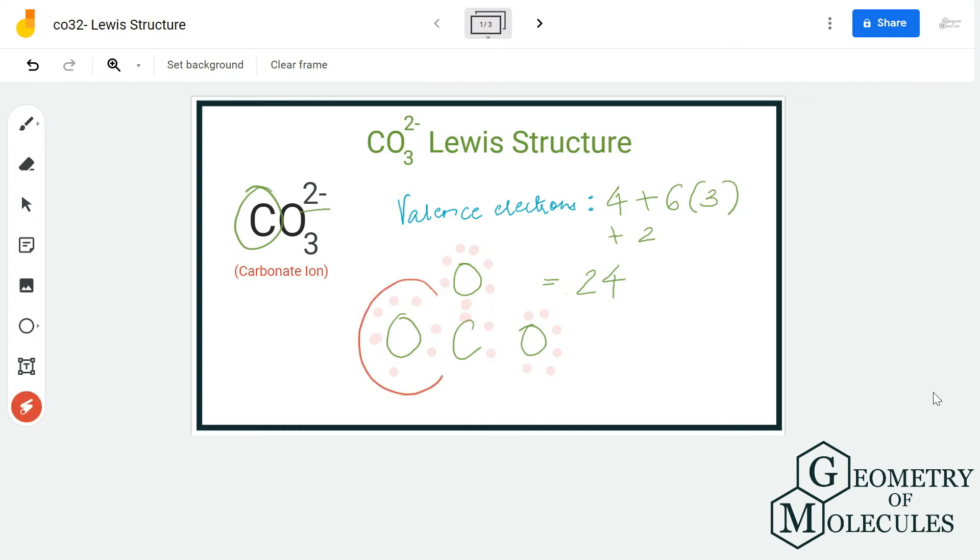So to fix this, I am going to shift one pair from here in between a carbon and oxygen atom and then check the octets of all atoms. So now this oxygen also has eight valence electrons in its outer shell. Carbon also has eight valence electrons, which means we have completed the octets of all the atoms.